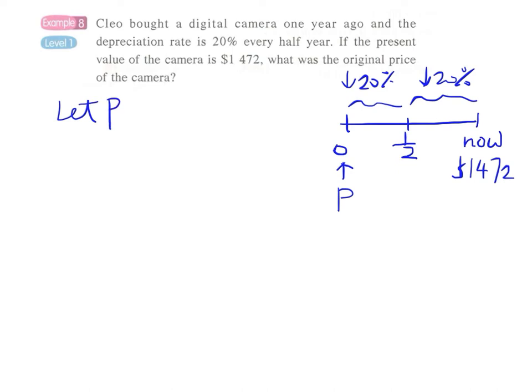So we can simply let P be the original value, P dollars. And now by observing this timeline we have P times (1 minus 20 percent) to the power 2...